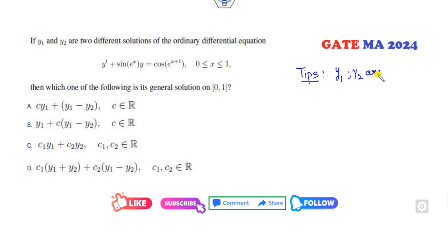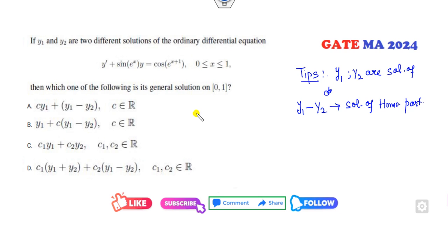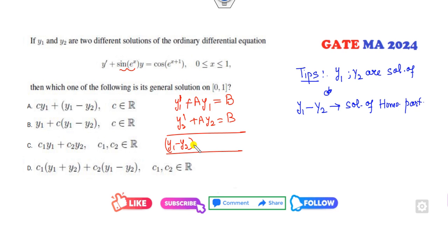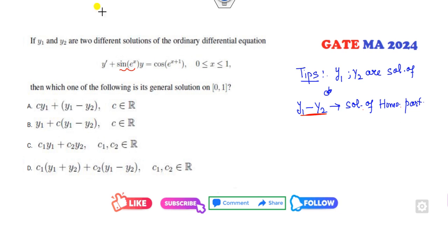Always remember the concept: if y1 and y2 are solutions of this equation where the right-hand side is non-zero, then y1 minus y2 is the solution of the homogeneous part. Because if you call the operator A applied to y1 equals B, and similarly A applied to y2 equals B, then subtracting gives A(y1 - y2) = 0. So y1 minus y2 is a solution of the homogeneous part.